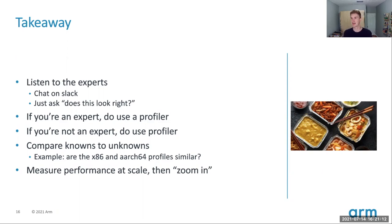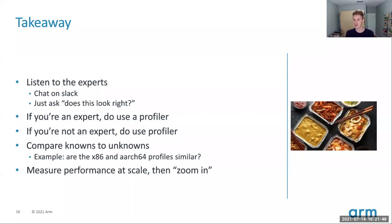Try to compare knowns to unknowns — in our example, comparing a call to get_ch_info(X,X) versus get_ch_info(X,Y) let Igor see there was an error. You might compare a gold standard on one architecture with a gold standard on another. Instead of taking small-scale performance and extrapolating to large scale, do a high-level lightweight profile at scale if possible, then zoom in on the code regions you care about. That usually gets you to success a little bit quicker than extracting a microkernel and optimizing it in isolation.